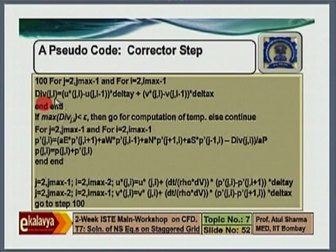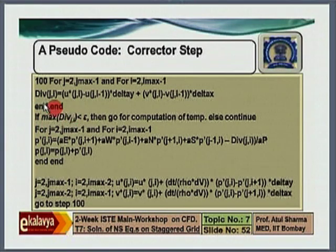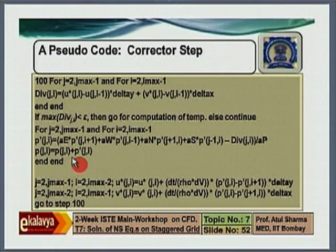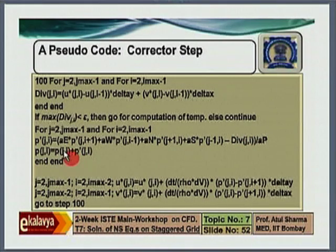This epsilon is what we call practically zero, which a user has to define. If the mass source has become practically zero, then whatever velocity you have predicted is the correct velocity for the next time step, and you can go for computation of temperature in the case of a forced convection heat transfer problem. If it has not converged, then you solve for pressure correction as a function of mass imbalance. You add the pressure correction to the earlier pressure — this is basically a pressure tuning — and obtain an updated value of pressure.